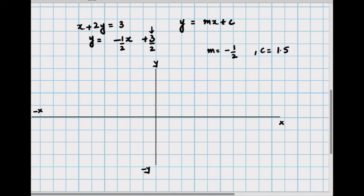So positive 1.5 would be somewhere here. So that's the point at which the line would cross the y-axis. So from here if you want to draw a slope of negative 1 over 2...